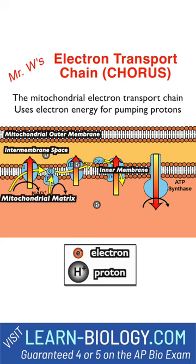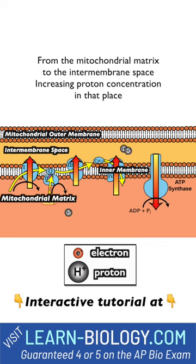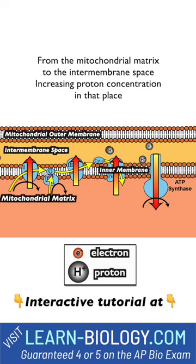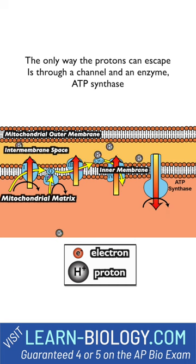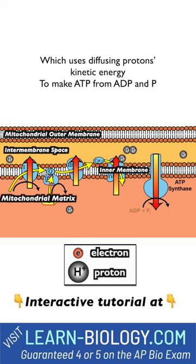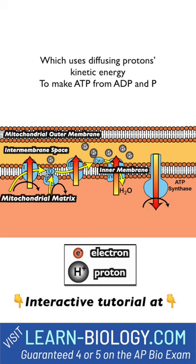The mitochondrial electron transport chain uses electron energy to pump protons from the mitochondrial matrix to the intermembrane space, increasing proton concentration in that place. The only way the protons can escape is through a channel and an enzyme, ATP synthase, which uses the diffusing protons' kinetic energy to make ATP from ADP and Pi.